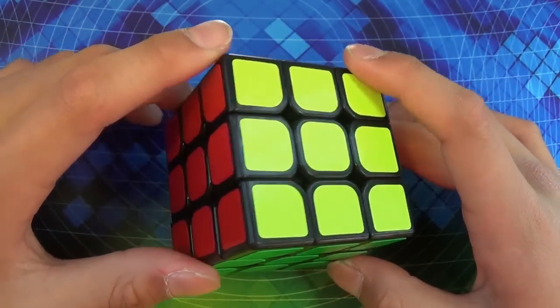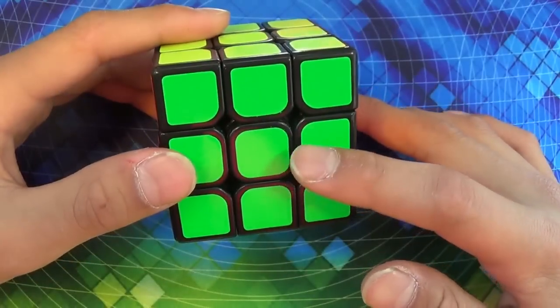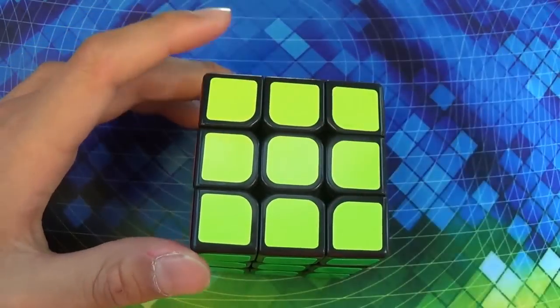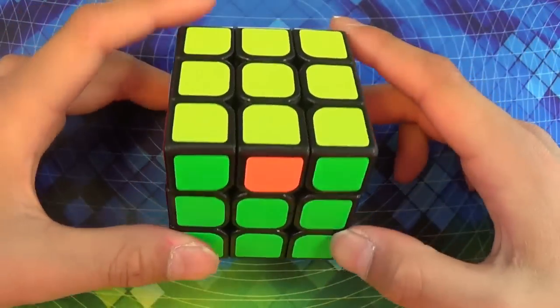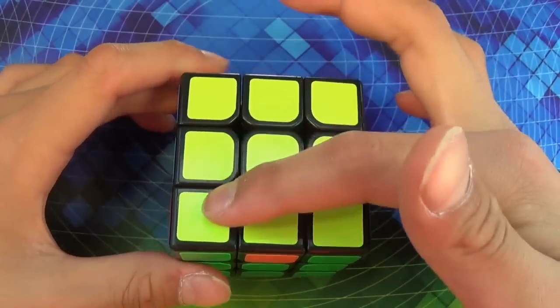So I'm going to go scramble this, finish this first two layers, and I'll be right back. Okay, so after you finish the yellow layer, what you want to do is look for what's called headlights.